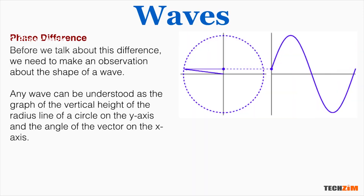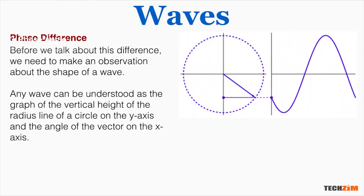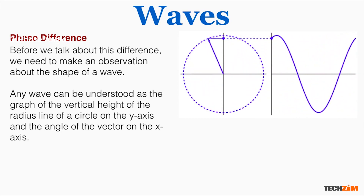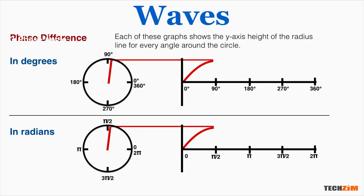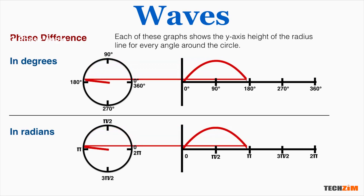The phase angle speaks to the position of the oscillation at any point in time. Think of it this way — you have two wheels. One has a groove and the other has a bump. This groove and bump match very well such that if they are put together, they fit in perfectly. If we want these two wheels to spin together smoothly, it's not enough to just spin them at the exact same speed or frequency.